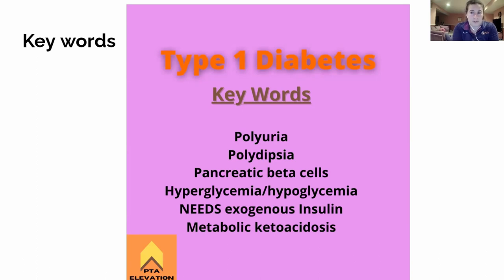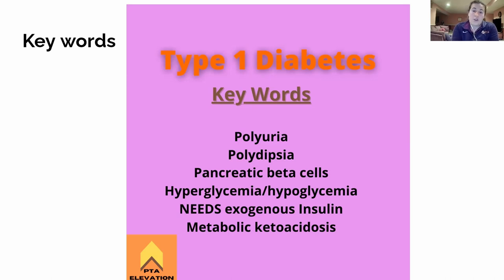They need exogenous insulin — that's insulin that comes from outside of the body. Our type 2 diabetics still do produce their own insulin; their receptors are just not working as well.